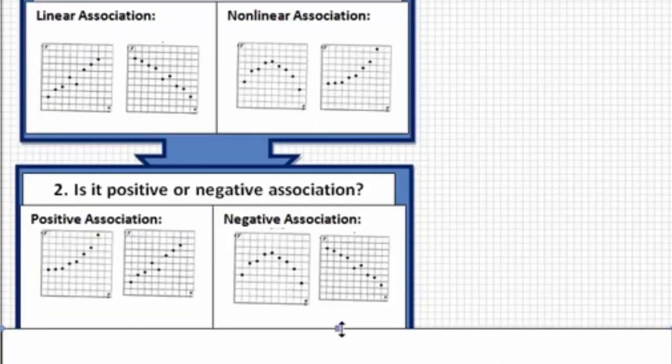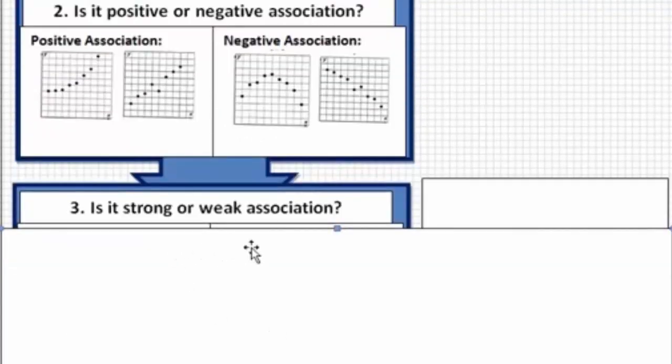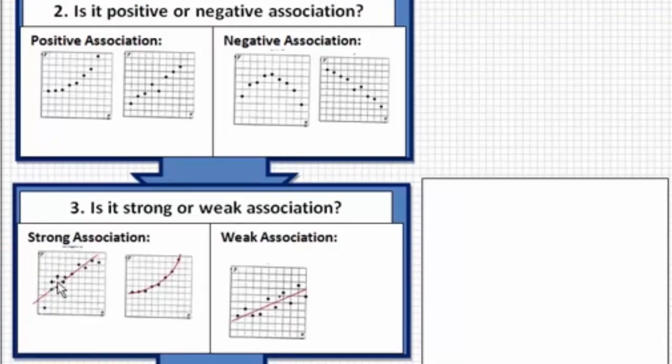And our final question that we ask is, is it a strong or weak association? So that has to do with when we actually start putting a trend line or a trend curve onto our graph, so I've done that in red here. How closely do the points fall on that trend line or trend curve? Here, although we have some points that are not directly on this line, they're all pretty close, and so we would say that this has strong association.